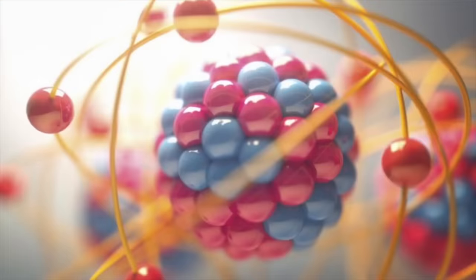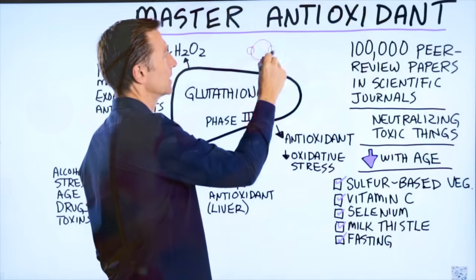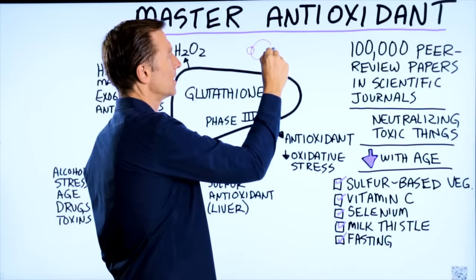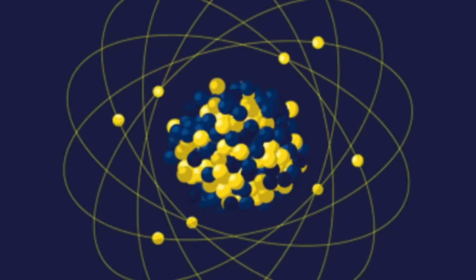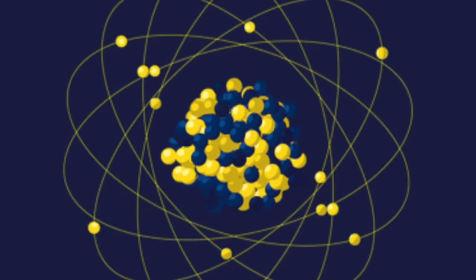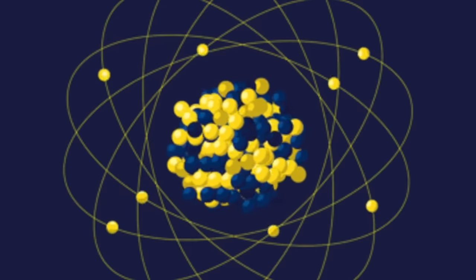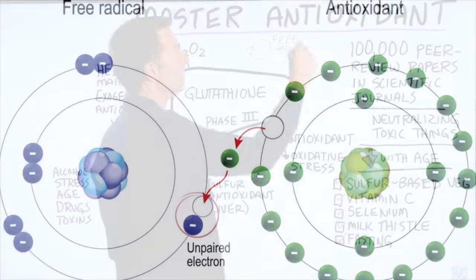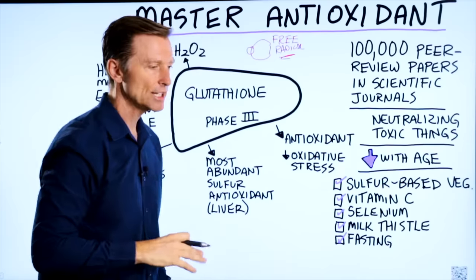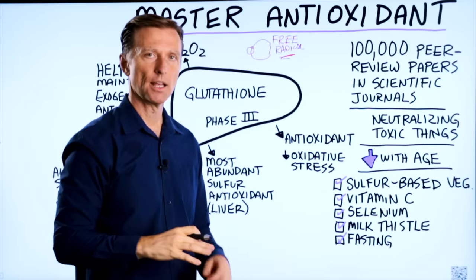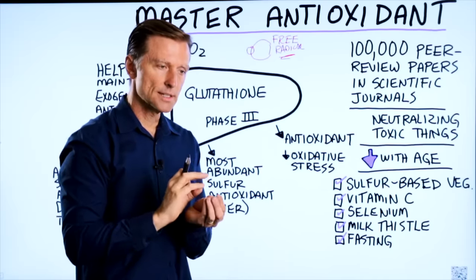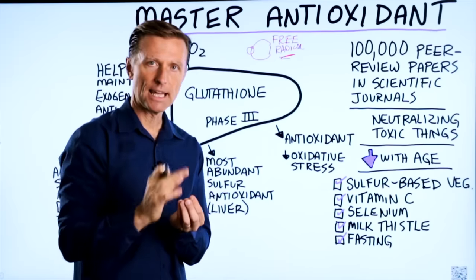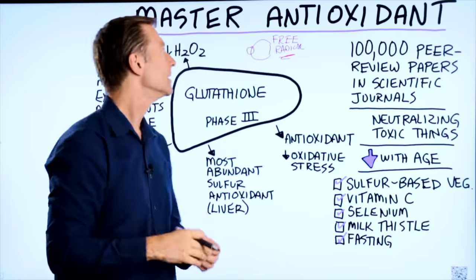If you take an atom with paired electrons, and one of those electrons is missing, it's called an unpaired electron, making it unstable. So that's called a free radical. It's not very balanced and it can create a lot of destruction throughout the cells, the cell machinery, the DNA, et cetera.